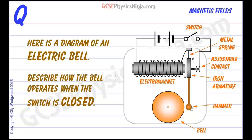Here's a diagram of an electric bell and we need to describe how the bell operates when the switch is closed.